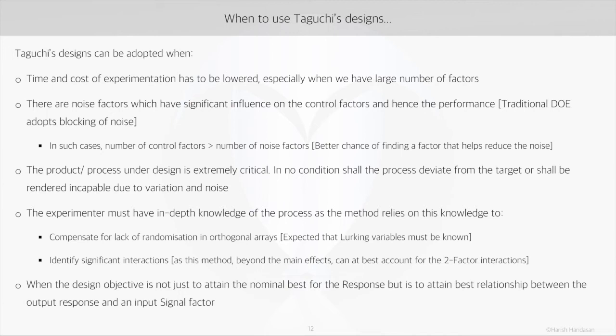In some cases, it is not the optimal best we are after when it comes to the process output. Especially in a product scenario, at times we want the output to vary in a controlled way when an input factor is changed. As an example, if we take the accelerator pedal in a car, we would want the rate of acceleration to be tied to how much we press the pedal. Such a factor is called the signal factor.